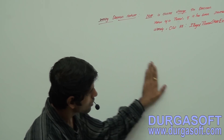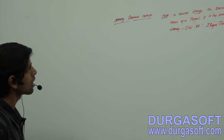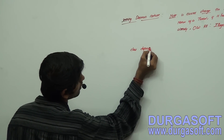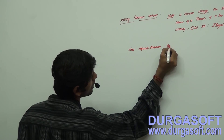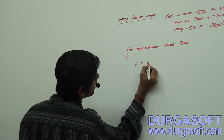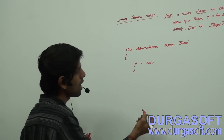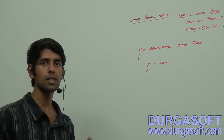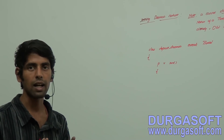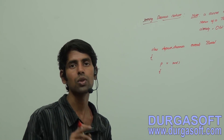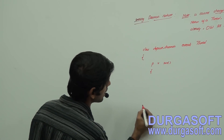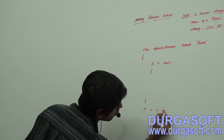Now let us understand how to set the daemon nature in code. Let me take one class — let it be called DefaultDaemon which extends Thread. Now let me override the public void run() method so that our class's run method gets executed by the child thread, otherwise it will execute the Thread class's run method. Then add a public static void main method.